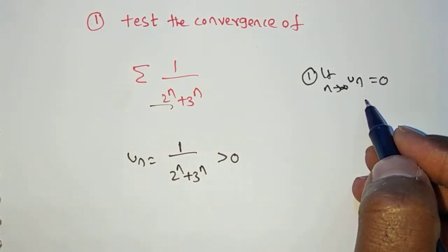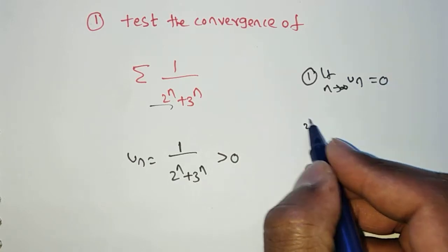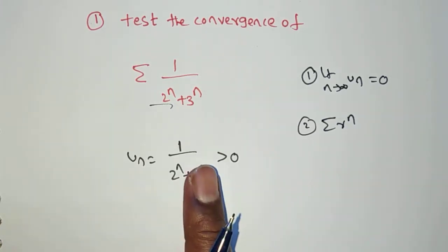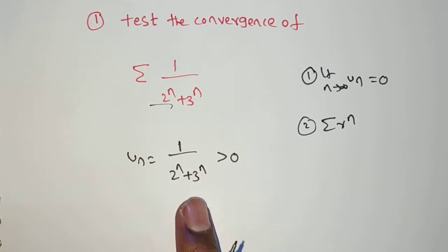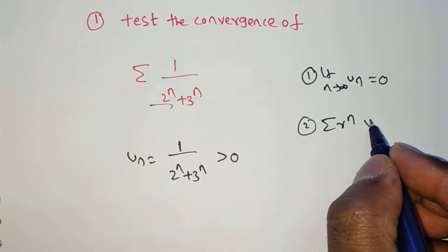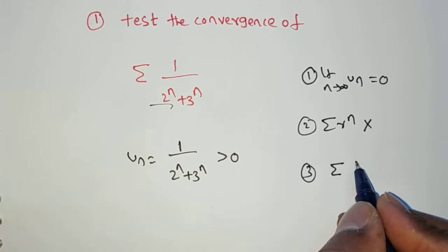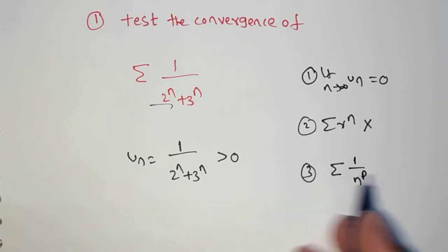If the limit is not equal to 0, we say it is divergent — by the necessary condition. Next, we check if this is in summation r power n form directly. If it were only 1 by 2 power n, that would be the geometric series form. But here we have 1 by (2ⁿ + 3ⁿ), so we cannot apply the geometric series test. It is also not in the 1 by n to the power of p form, so we cannot apply the p-series test either.